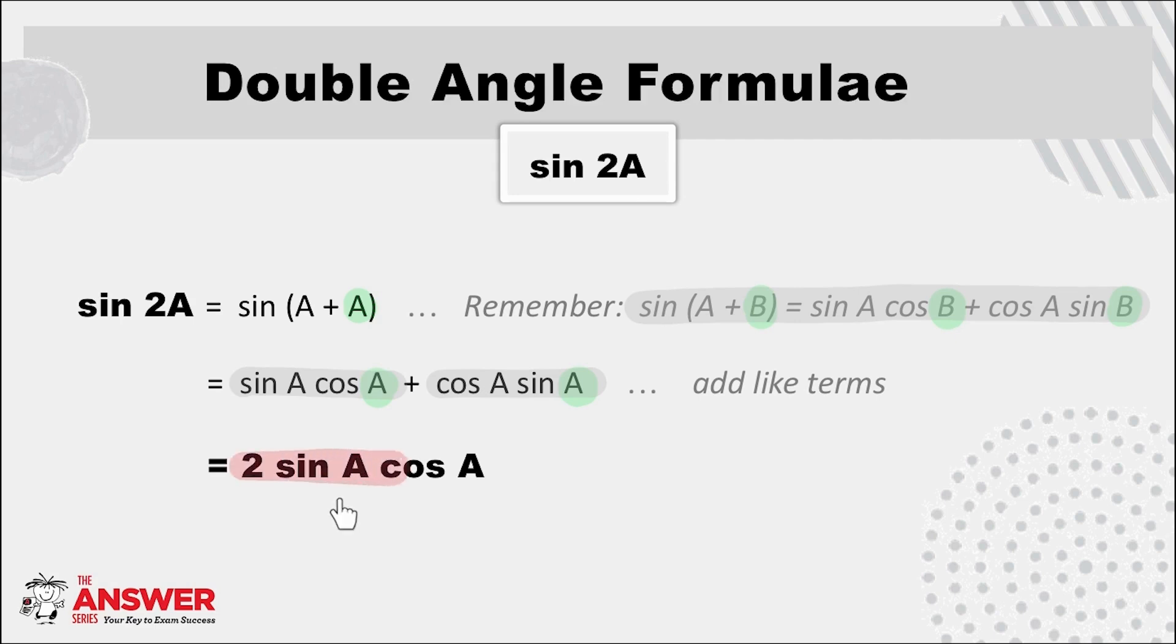Can you see because of the equal angles that this creates like terms which if we then add together gives us 2 sine A cos A, which is the expansion for sine of a double angle.